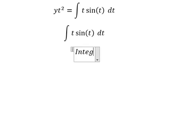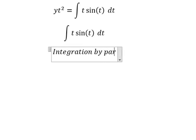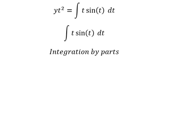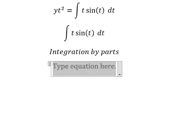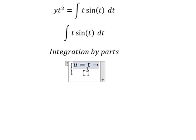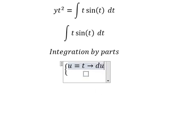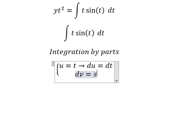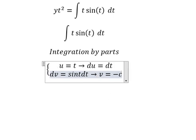So I will let u equal to t. Now we need to take the first derivative of both sides. We have dv equal to sine(t) dt. The integration of dv gives us v equal to negative cosine t.